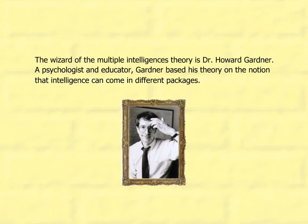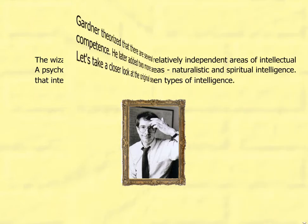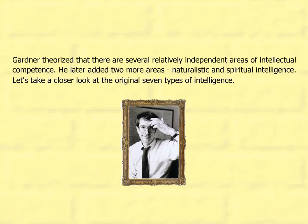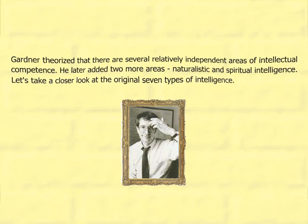Gardner based his theory on the notion that intelligence can come in different packages. He theorized that there are several relatively independent areas of intellectual competence. He later added two more areas: naturalistic and spiritual intelligence. Let's take a closer look at the original seven types of intelligence.